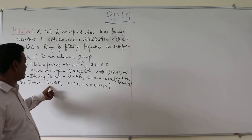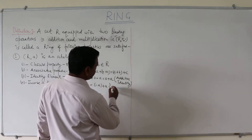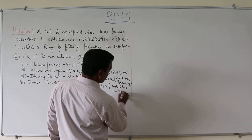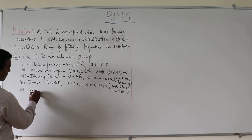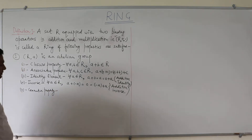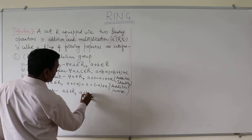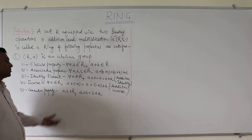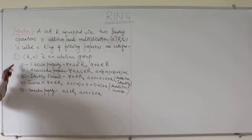If this set contains a, then it will also contain −a, and this is the additive inverse. The fifth property is the commutative property — if a, b belong to R, then a + b = b + a. These five properties are the properties of an Abelian group, so this set will be an Abelian group.